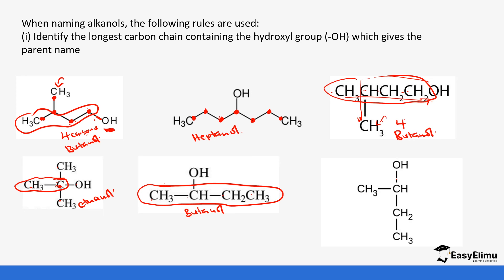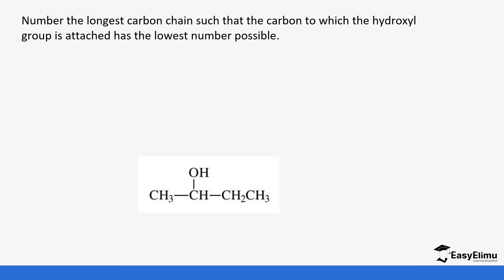Finally, remember where the OH is — this is going to be the longest chain, there is no branch. Don't forget that the OH is part of the main parent name, not a branch. After identifying the longest chain, we number it such that the carbon to which the hydroxyl group is attached has the lowest number. So in this case this is carbon one, carbon two, carbon three, carbon four.